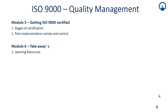Module 5 is about getting ISO certified. If a company wants to get ISO certified, we will cover what are the stages of certification it will have to pass through, and after the certification, what will be the post-implementation review and control measures. Module 6 will be our takeaway module — a refreshment module where we will review what we have learned in the entire course, and also discuss some learning resources which will help you do further research after this training is over.